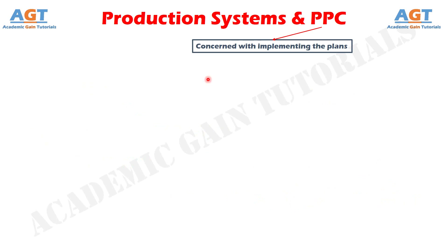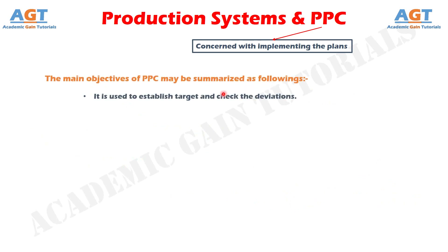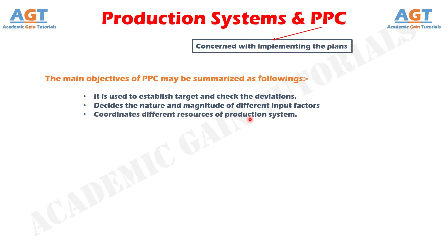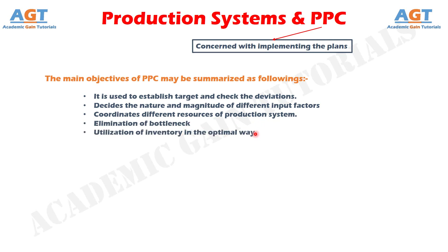What are the main objectives of PPC? It is used to establish targets and check deviations by comparing on some performance measures. It decides the nature and magnitude of different input factors to produce the output. It coordinates different resources of the production system in the most effective and economic manner and coordinates among different departments. Other objectives include elimination of bottlenecks, optimal utilization of inventory, and smooth flow of material.